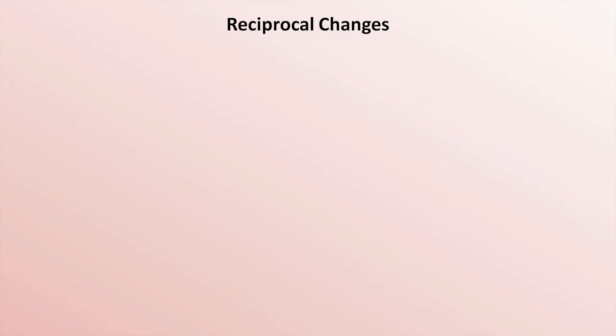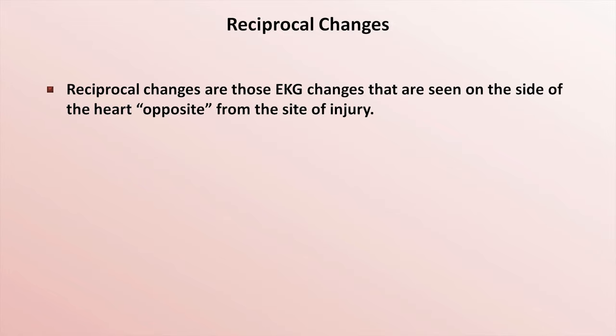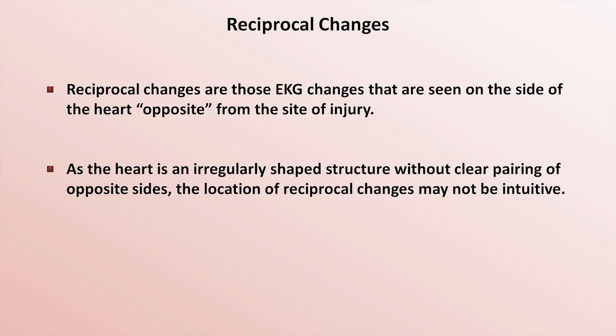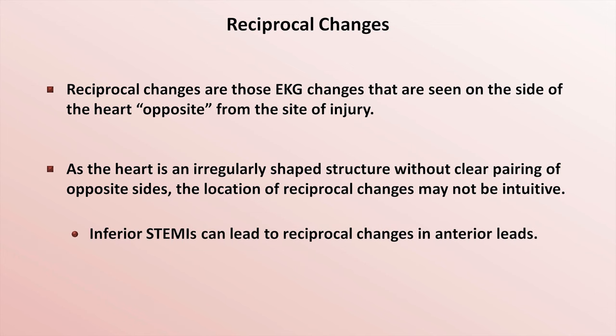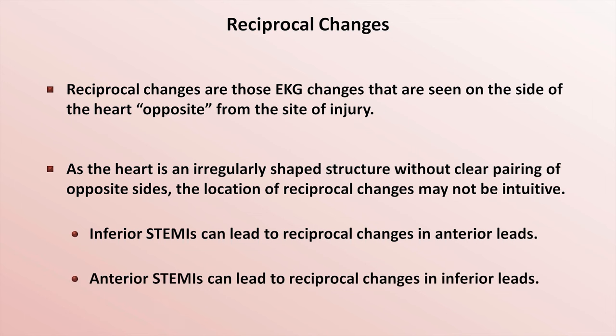An important EKG characteristic of acute MIs not yet discussed are reciprocal changes — EKG changes seen on the side of the heart opposite from the site of injury. These are typically in the form of ST depressions. As the heart is an irregularly shaped structure without clear pairing of opposite sides, the location of reciprocal changes may not be intuitive. For example, inferior STEMIs can lead to reciprocal changes in the anterior leads, and anterior STEMIs can lead to reciprocal changes in the inferior leads.